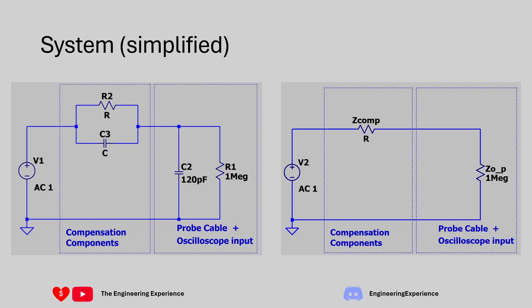Let's simplify that model. We had two capacitors in parallel — one representing the probe lead and the other representing the scope input. Two capacitors in parallel can simply be added together. There is a solution in my Art of Electronics playlist going through the derivation if you need it. So we end up with a total capacitance of 120 picofarads on the system side. We can represent the scope-side components as Z0 and the compensation network components as Z_comp.